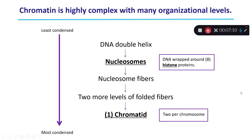So how do we get a chromosome in the first place? We start with a DNA double helix — the least condensed form, not yet even chromatin because it's not associated with any proteins. Then we create what's called a nucleosome, which is DNA wrapped about one and a half times around eight core histone proteins. Think of the histone proteins as a spool and the DNA as the thread wrapped around that spool. That's the next form of condensing.